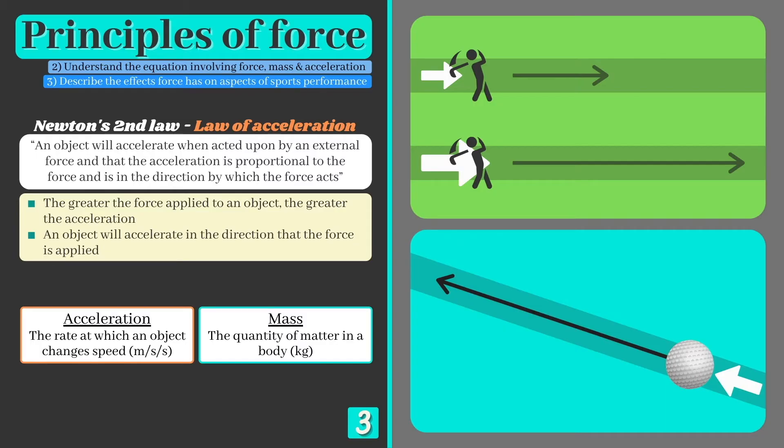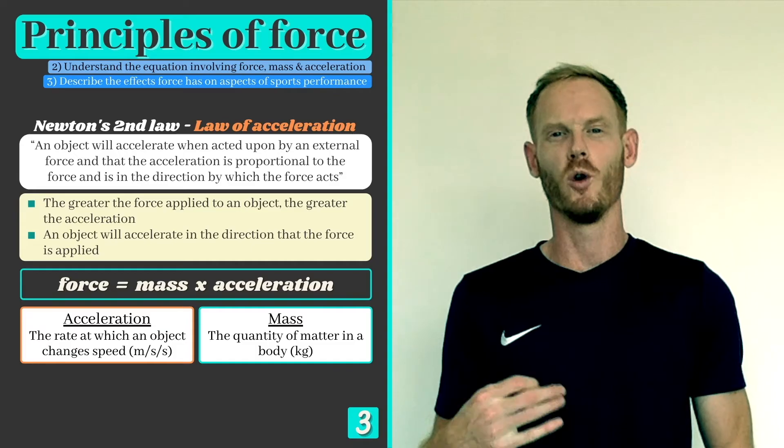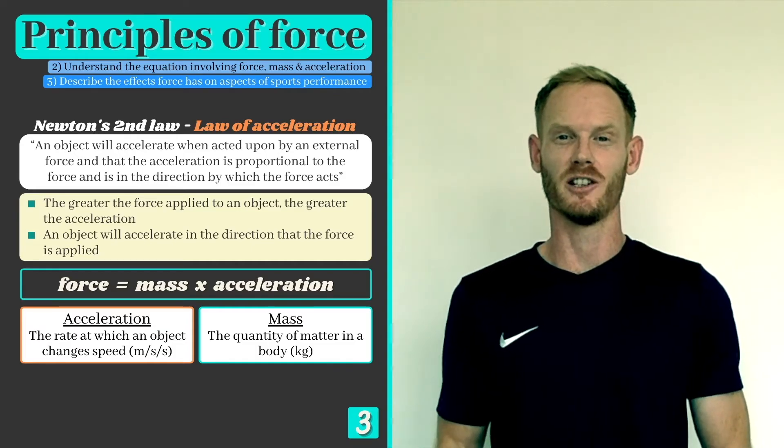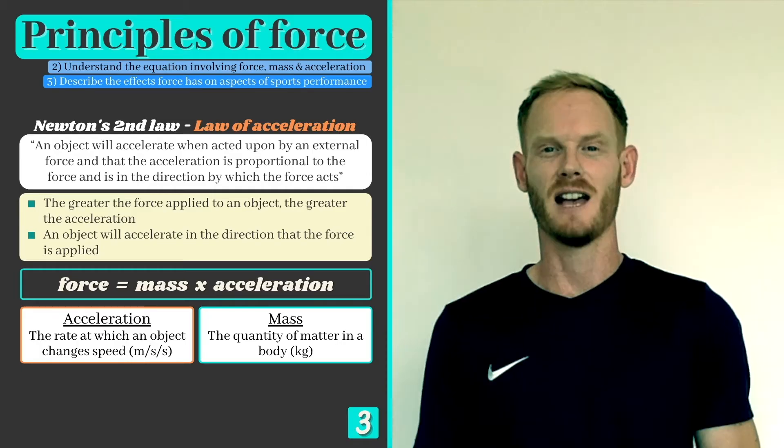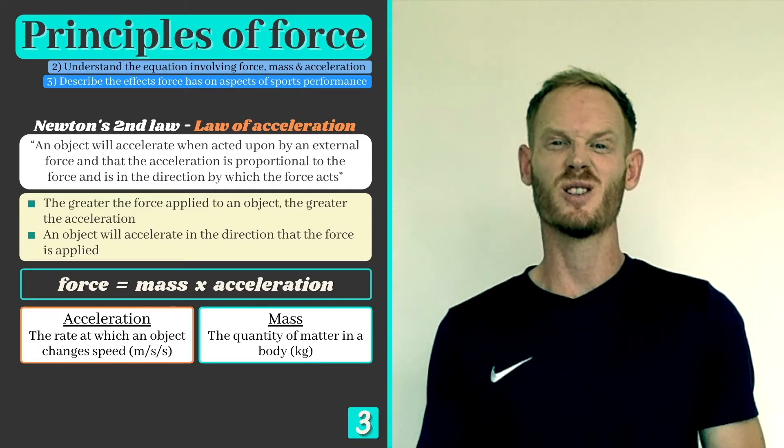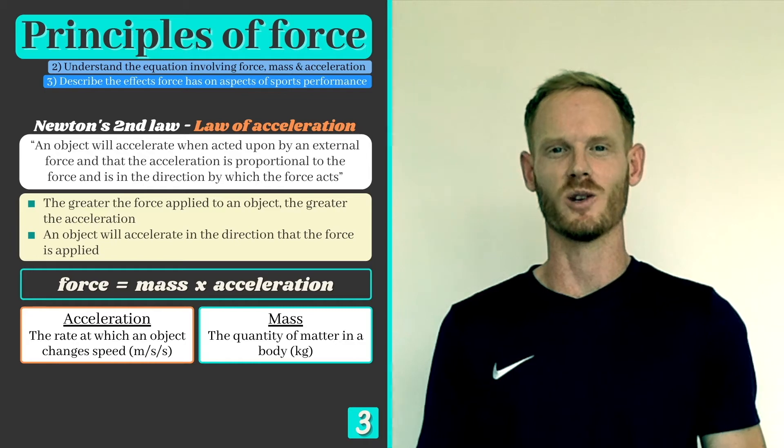Fortunately, Newton's second law can be explained using a very simple formula: force equals mass times acceleration, where force is measured in newtons, mass is measured in kilograms, and acceleration is measured in meters per second per second, or meters per second squared.